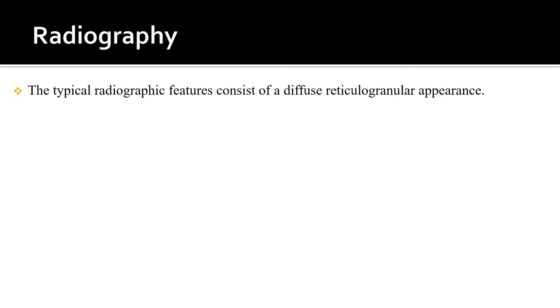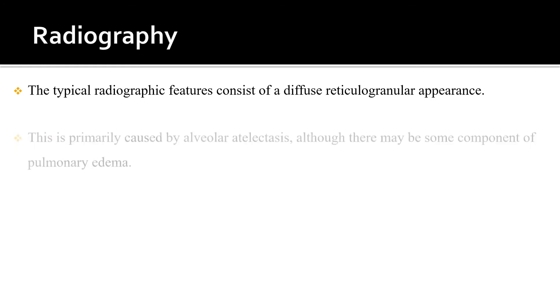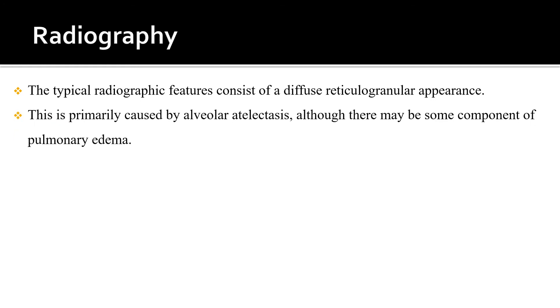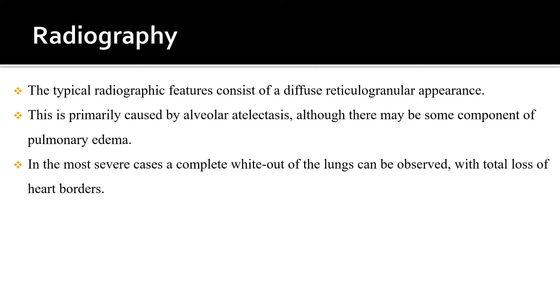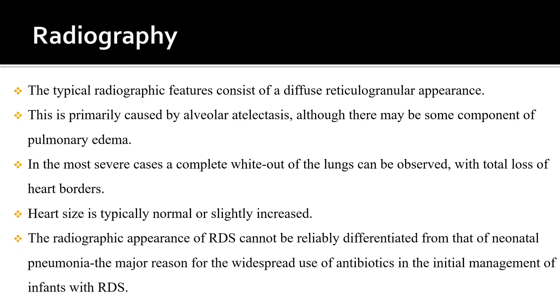On chest radiograph, the typical radiographic feature consists of a diffuse reticulogranular appearance, primarily caused by alveolar atelectasis, although there may be some component of pulmonary edema. In the most severe cases, a complete whiteout of the lungs can be observed with total loss of heart borders. Heart size is typically normal or slightly increased. The radiographic appearance of RDS cannot be reliably differentiated from neonatal pneumonia, especially from group B streptococcus, which is the major reason for using antibiotics in the initial management of infants with RDS.